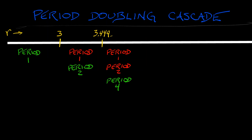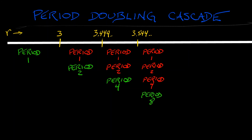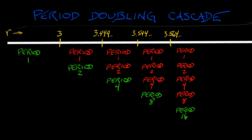This keeps on going until about r ≈ 3.544. In which case, we still have our unstable period-1 orbit, our unstable period-2 orbit, that period-4 orbit becomes unstable, and it sheds a stable period-8 orbit. Is there yet another period-doubling bifurcation? Of course there is. It happens at about r ≈ 3.564, in which case we're left with a stable period-16 orbit and this growing collection of unstable periodic orbits.